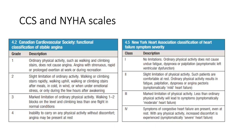These are the functional scales: the Canadian Cardiovascular Society looking at chest pain, and the New York Heart Association looking at dyspnea — essentially the same degrees, just one speaks to chest pain and one to dyspnea. Grade 1 in the CCS is chest pain that does not ordinarily affect the patient unless they are excessively straining. Normal physical activity is quantified by walking up a flight of stairs or about two blocks on the flat. Grade 2 is slight limitation of ordinary activity. Grade 3 is marked limitation, and grade 4 is symptoms at rest. The same applies to NYHA but speaking to dyspnea.